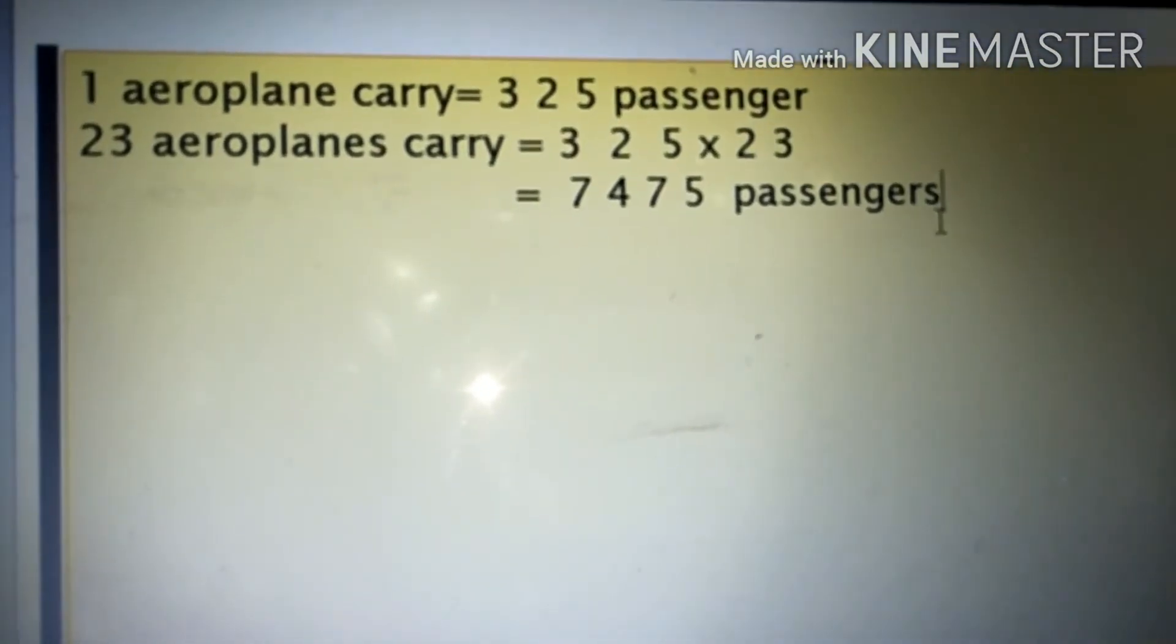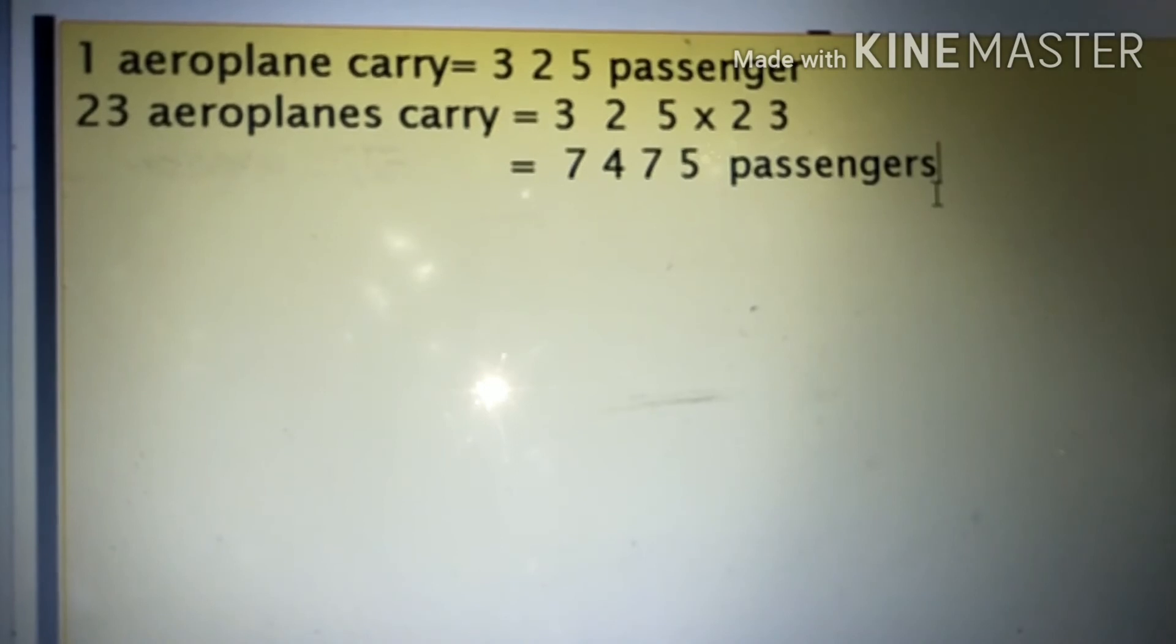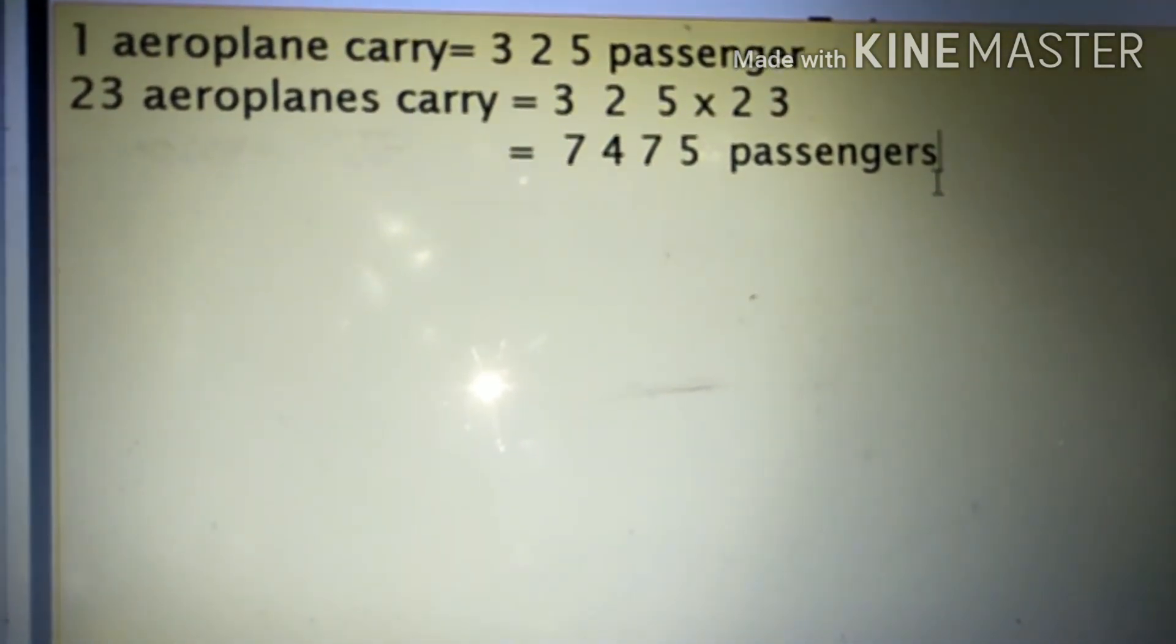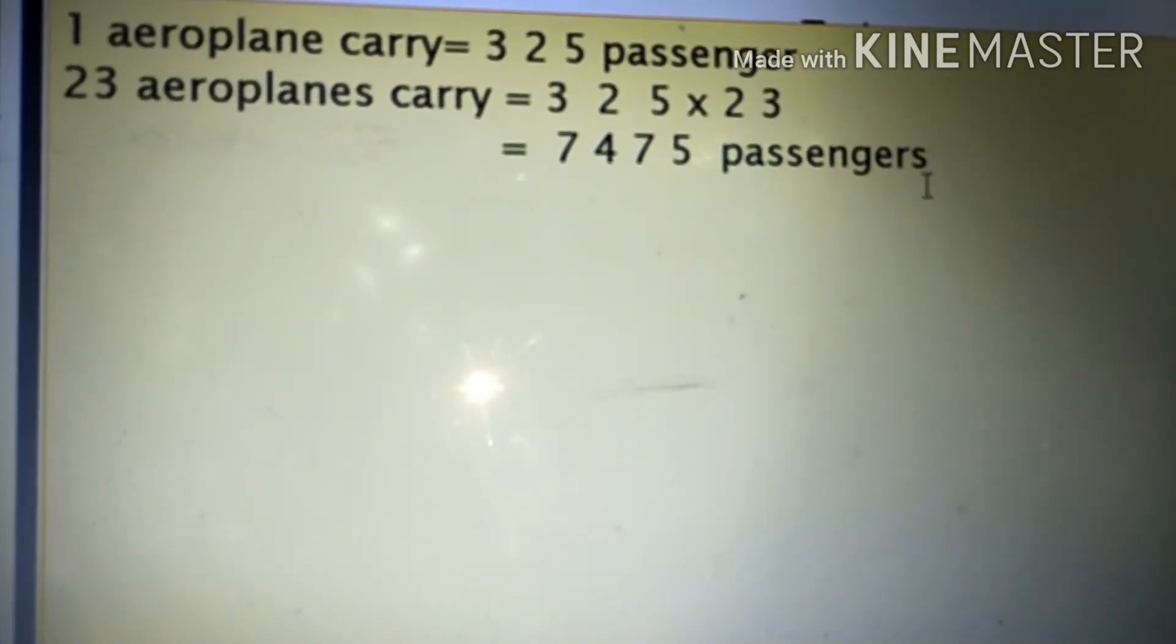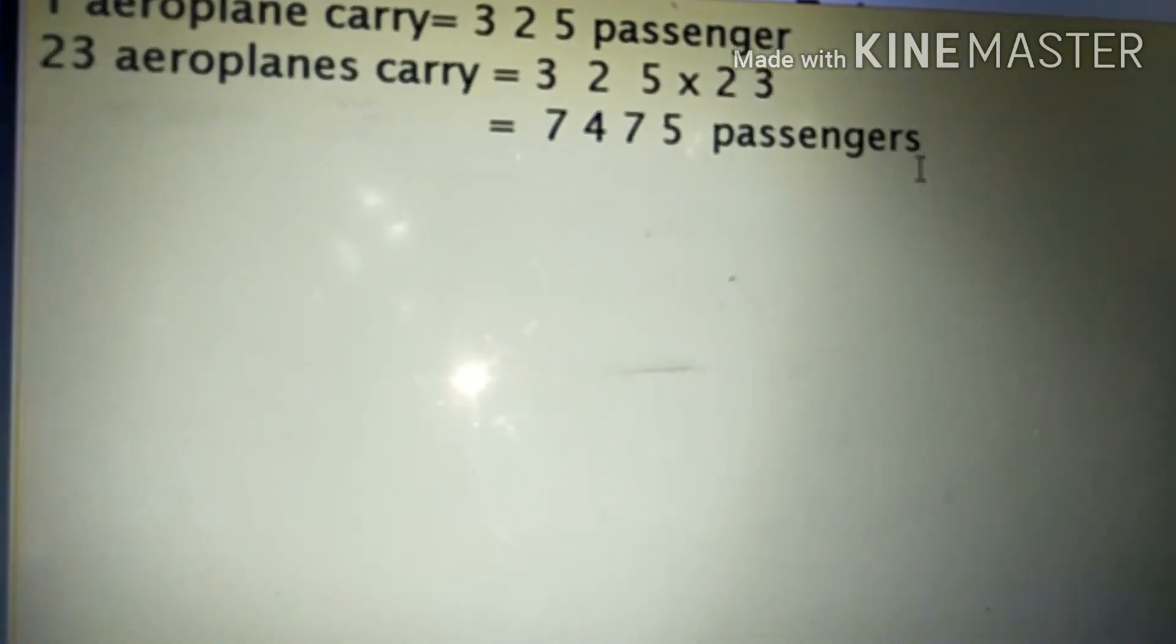So one airplane carries three hundred and twenty-five passengers. Therefore, twenty-three airplanes carry seven thousand four hundred and seventy-five passengers. Thank you, students.